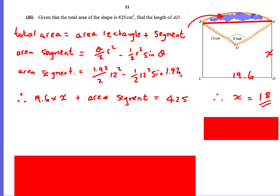Try not to round too early — use three significant figures for IB. So those are a few questions on trig, sectors, and segments.